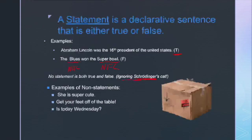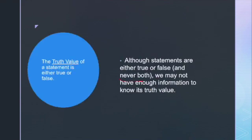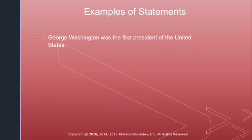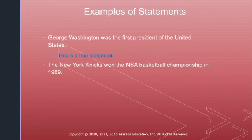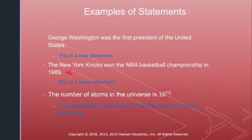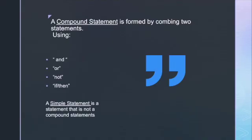Although statements are either true or false — never both — we may not have enough information to know its truth value. The truth value of a statement is either true or false. For example: 'George Washington was the first president of the United States' is true. 'The New York Knicks won the NBA Basketball Championship in 1989' is false. 'The number of atoms in the universe is 10 to the 75th' is either true or false, but we don't know which — we have a rough guess but can't confirm it.